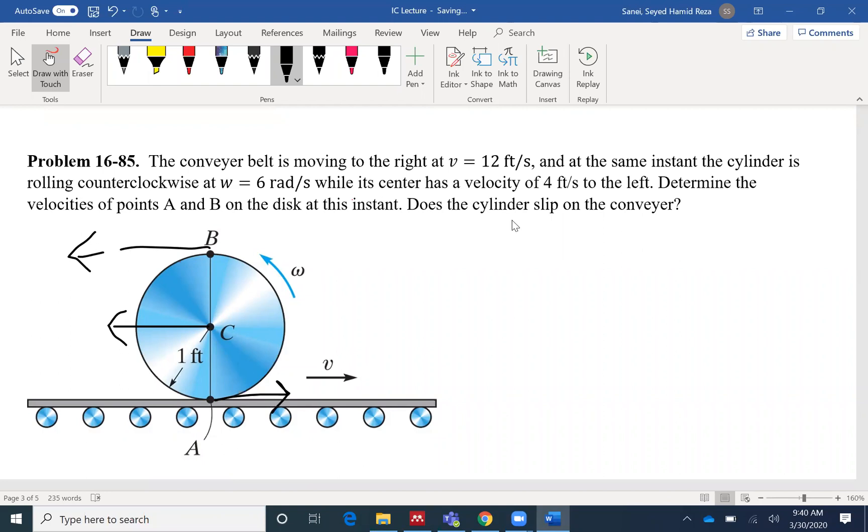Does the cylinder slip on the conveyor or not? So in addition to the velocity of A and B, we need to see whether the cylinder slips on the conveyor or not. For that we need to compare VA, the velocity at the point of contact, to V, the velocity of the conveyor belt. If the velocities are the same it means there is pure rolling and there is no slipping. If the velocities are not the same, it means there is slipping.